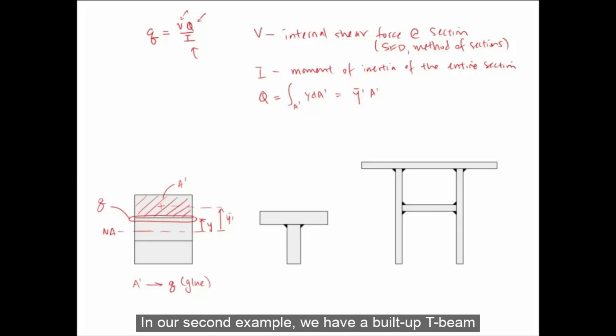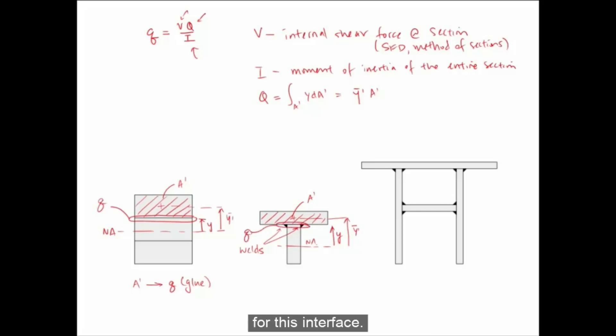In our second example, we have a built-up T beam where the web and the flange are two different components and they are held together by welds on either side of the web. So here if our point of interest is at the interface between the web and the flange, then this would be our Y. And then our flange area could be called as A prime and we can also find Y prime bar. And this should give us a value of Q for this interface.